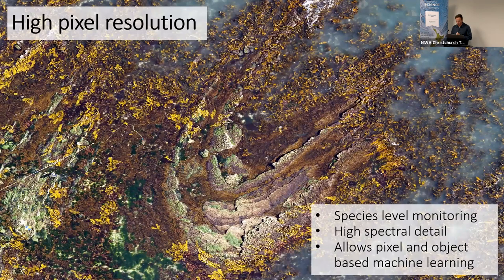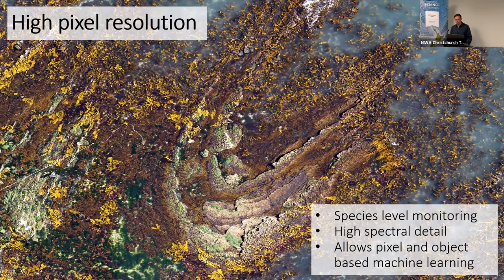Just to talk about high pixel resolution — this is really the key benefit you get from aerial drones. It allows, particularly for coastal ecosystems, the development of species-level classification algorithms and automated classification. This is really quite obvious when you look at a reef like ORO reef, which has a real mosaic of macroalgal and kelp diversity with definite patches of different species of different colours and forms. Without high resolution, you wouldn't be able to use object-based classification procedures, because most objects would fall over too few pixels to define their shape.